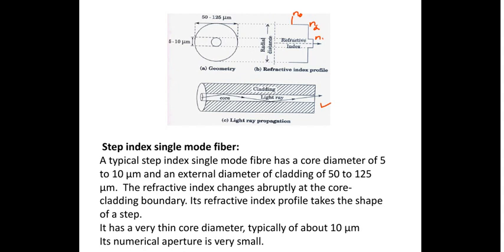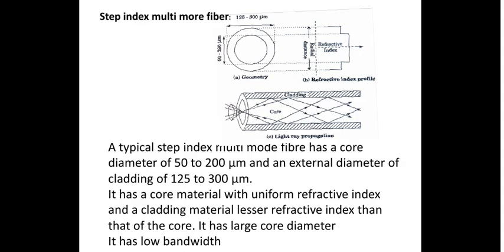Since only one mode of light passes, it is called step index single mode fiber. The second type is step index multi-mode fiber. In multi-mode fiber, the core size is bigger. The core diameter is 50 to 200 micrometers and cladding diameter is 125 to 300 micrometers. There is a large change in refractive index between core and cladding, and more modes of light can pass through.